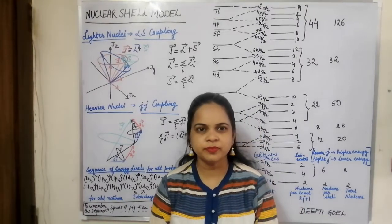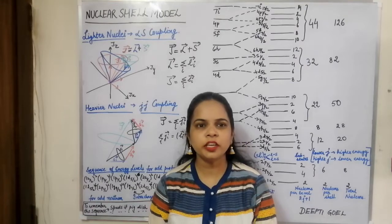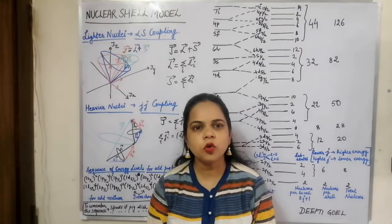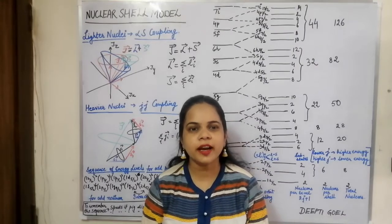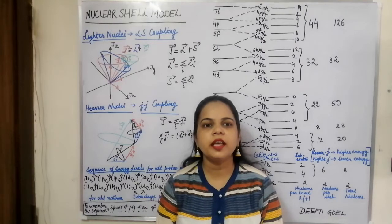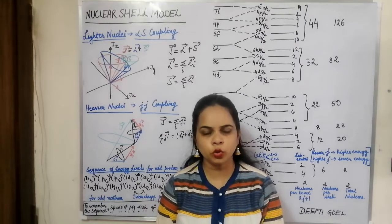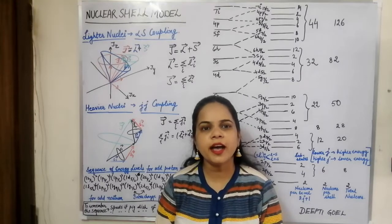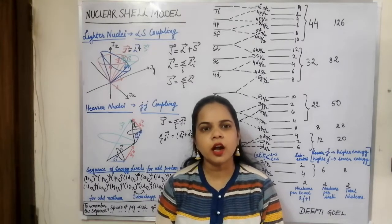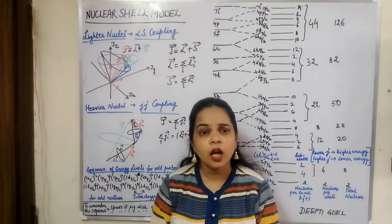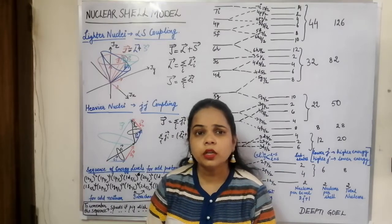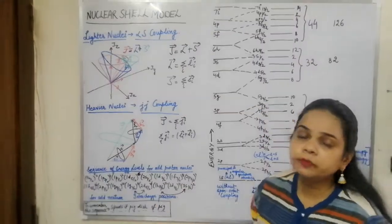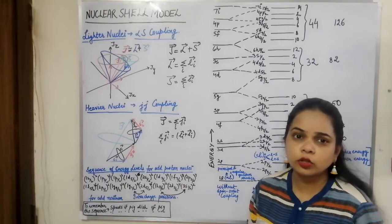Good morning everyone. Today we shall be discussing the nuclear shell model. As you all know, inside the nucleus there are neutrons and protons. They are revolving inside the nucleus in the same way as the electron revolves around the nucleus. So there was an analogy drawn between the nucleons and the electrons.